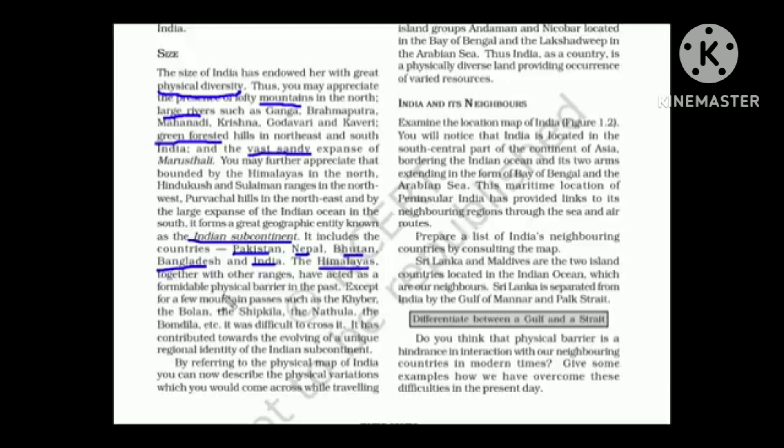Now talking about Himalaya, it is a physical barrier between India and China but there are a few mountain passes in between. The names are the Khyber and the Bolan Pass, the Shipkila, the Nathula and Bombdila. These are some very famous and important passes in Himalayas.